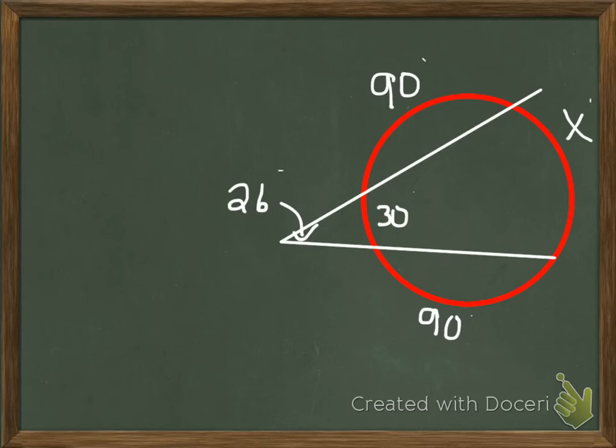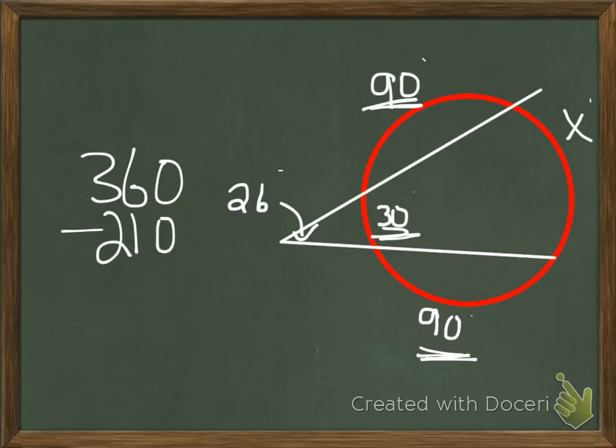You don't have to do a lot of calculation because all you have to do is add up these and subtract them from 360. So 360 minus, let's see, the 90 and 90 is 180, 90, 200, 210, so minus 210 equals 150, so x equals 150 degrees.